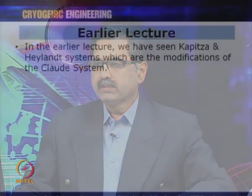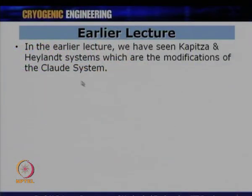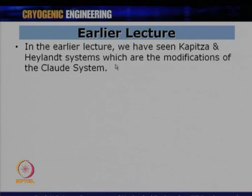Welcome to the 17th lecture of cryogenic engineering under the NPTEL program. In the last lecture, we saw Kapitza and Helland systems, which are modifications of the Claude system. In the Claude system, we had two to three heat exchangers and one expander, while in Kapitza and Helland, we had only two heat exchangers and one expander.